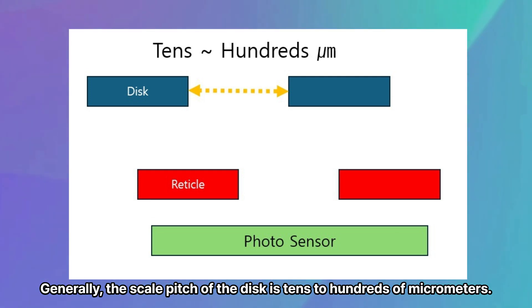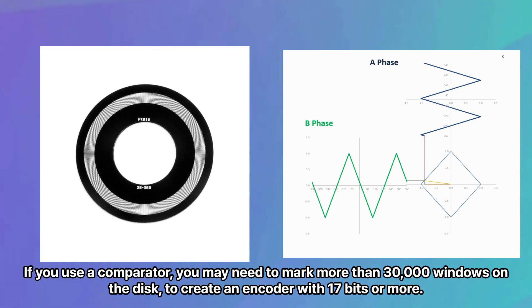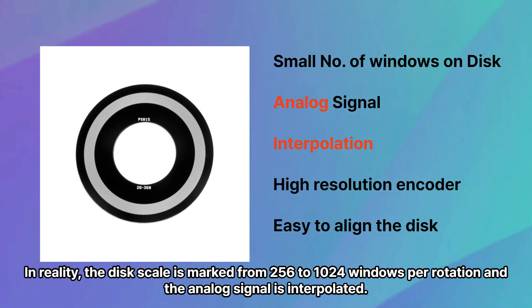Generally, the scale pitch of the disk is tens to hundreds of micrometers. If you use a comparator, you may need to mark more than 30,000 windows on the disk to create an encoder with 17 bits or more. In reality, the disk scale is marked from 256 to 1024 windows per rotation and the analog signal is interpolated.